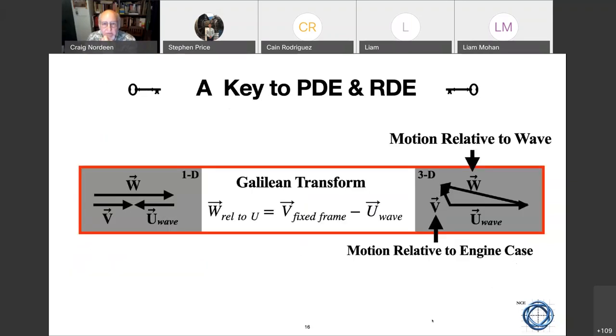And some of the differences, there's a thing that might be useful in other studies called the Galilean Transform, where you can go from a fixed frame coordinate system to a moving frame coordinate system using this vector equation. On the PDE, for one-dimensional, you get something that looks like this on the exhaust side of the PDE, where the U wave is going in one direction, the relative flow is going in the other, and the resulting gas velocity is a function of the summation. In the 3D, you get something that the gas turbine people will call a velocity triangle. And we have found that this is extremely helpful in understanding what is going on in the RDE.